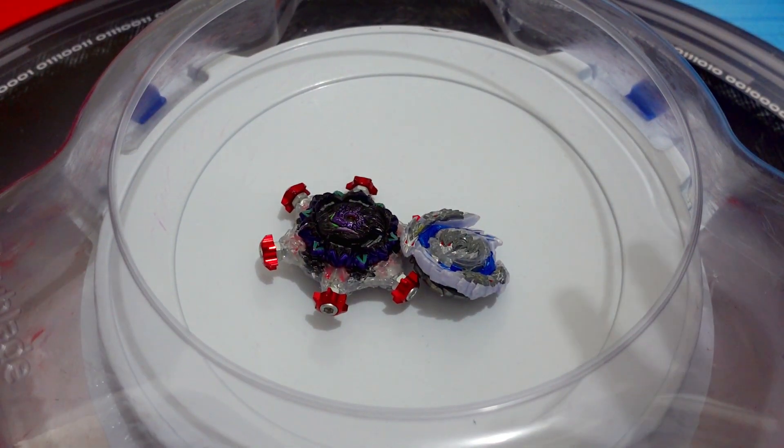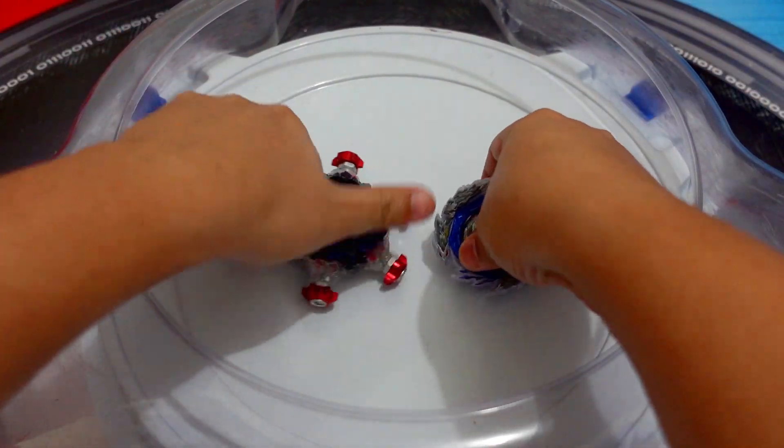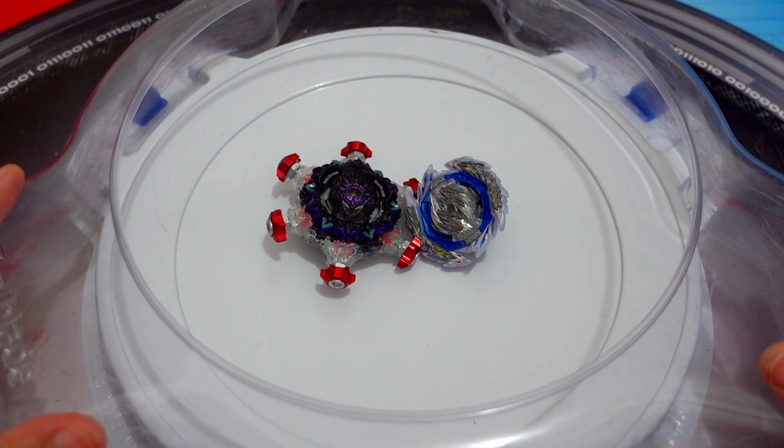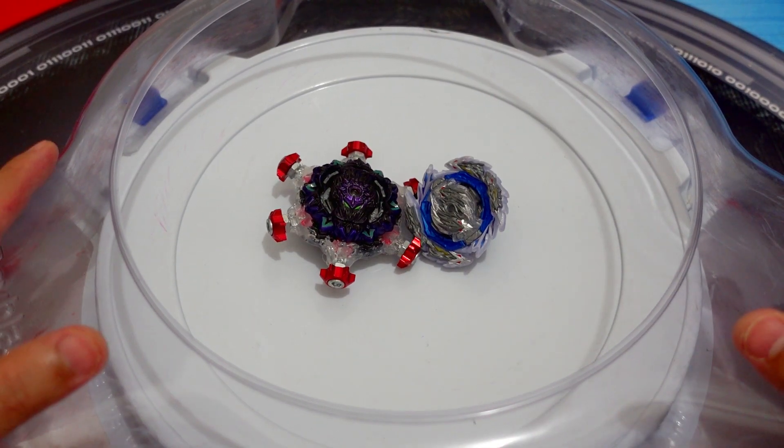The winner is Guilty Longinus. The total points is 6-1-2. Right? 7-1-2.